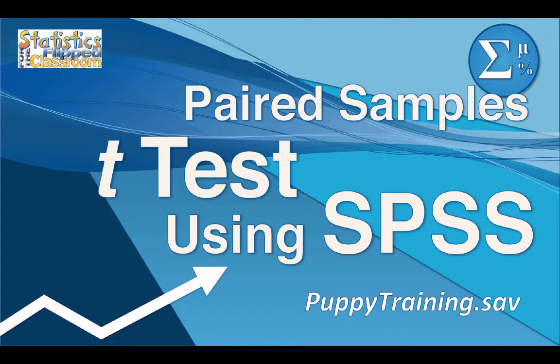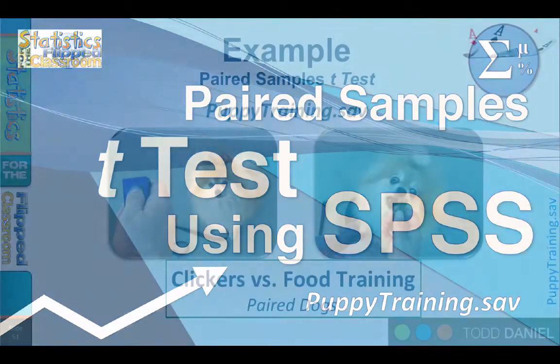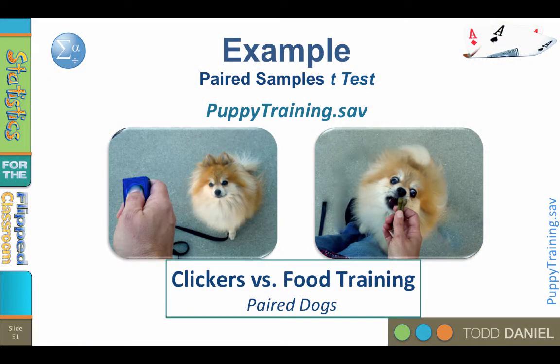We are now going to conduct a paired samples t-test using SPSS. We will be using the puppy training dataset, which is the same dataset that we used for the independent samples t-test.